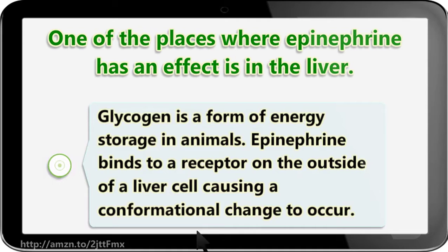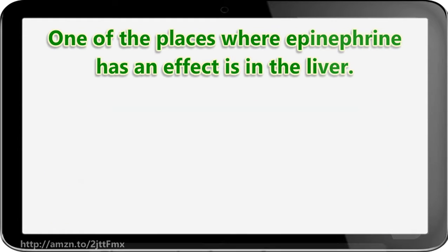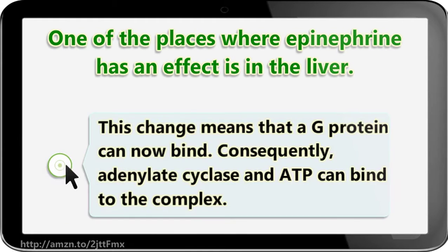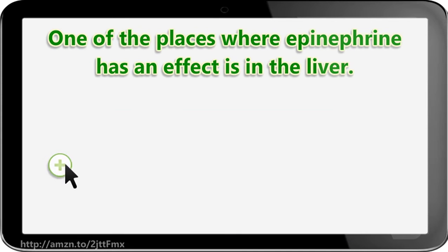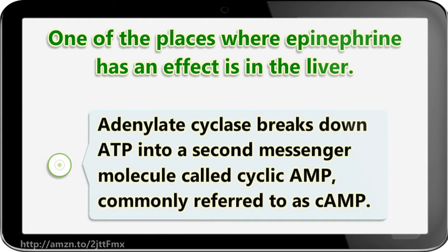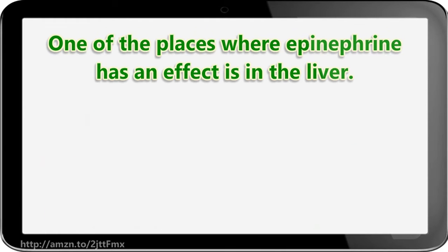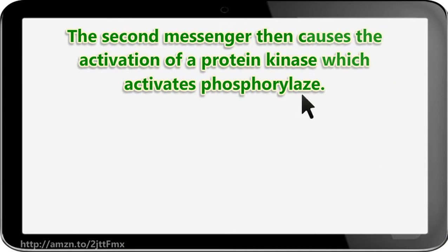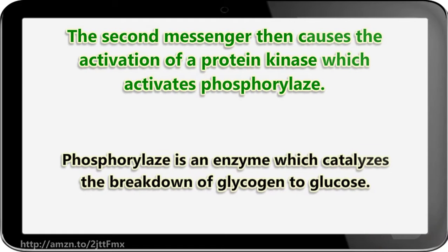Glycogen is a form of energy storage in animals. Epinephrine binds to a receptor on the outside of a liver cell, causing a conformational change to occur. This change means that a G-protein can now bind. Consequently, adenylate cyclase and ATP combine to the complex. Adenylate cyclase breaks down ATP into a second messenger molecule called cyclic AMP, commonly referred to as cAMP. The second messenger then causes the activation of a protein kinase which activates phosphorylase — an enzyme which catalyzes the breakdown of glycogen to glucose.